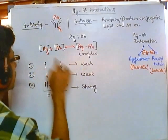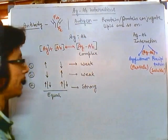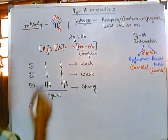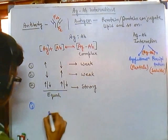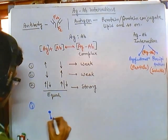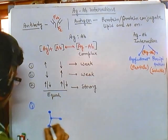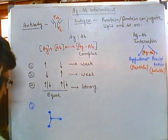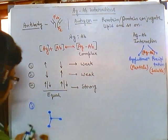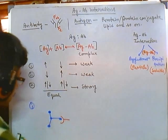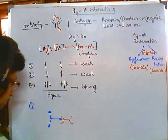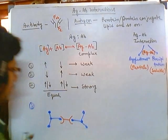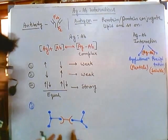Now, if we imagine scenario one — higher antigen, less antibody — suppose these are our antigens. There are a lot of antigens and there are few antibodies. The red structure represents the antibody. So with few antibodies and a higher antigen concentration, each antibody is surrounded by many antigens, resulting in a weak, small complex.